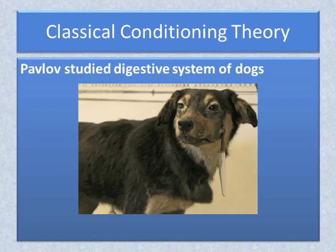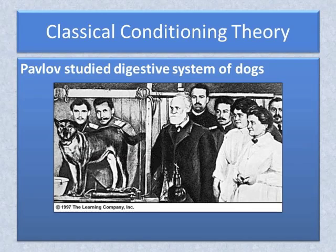At the time of his discovery of the laws of classical conditioning, Pavlov was studying the digestive systems of dogs. In this picture, you can see an apparatus that has been attached to the dog to collect saliva. Pavlov became intrigued with his observation that dogs deprived of food began to salivate when one of his assistants walked into the research laboratory.